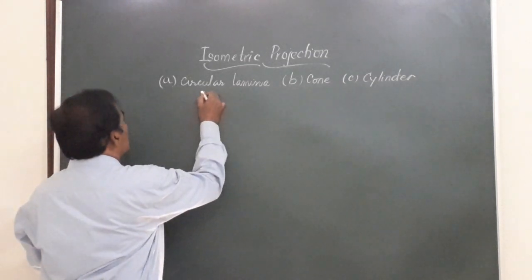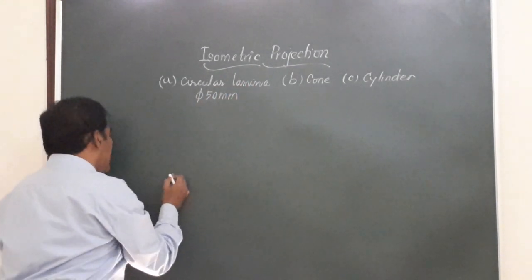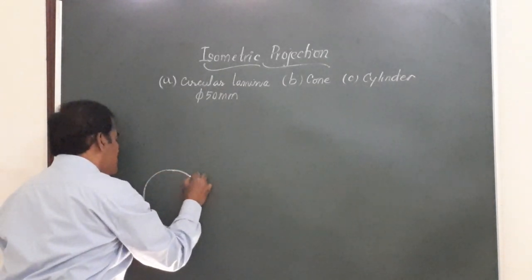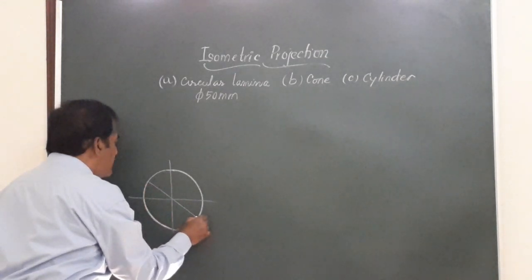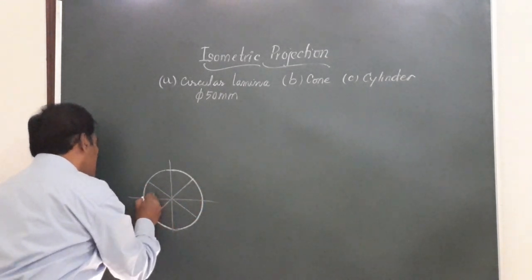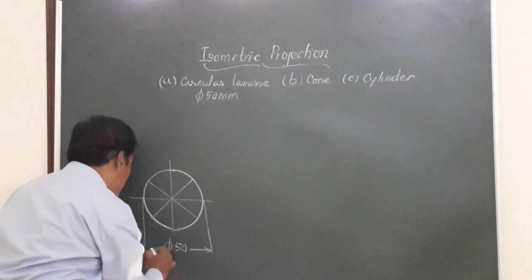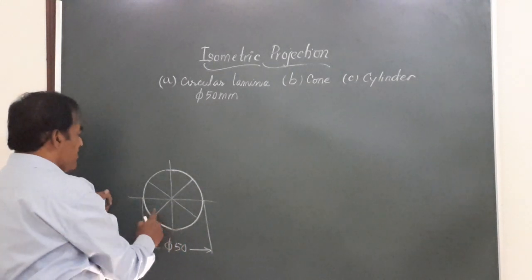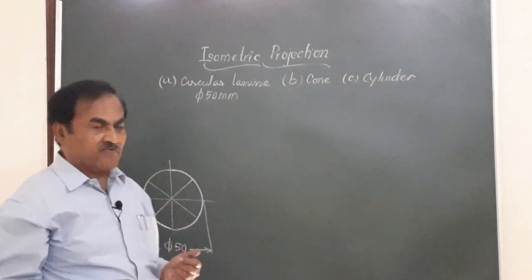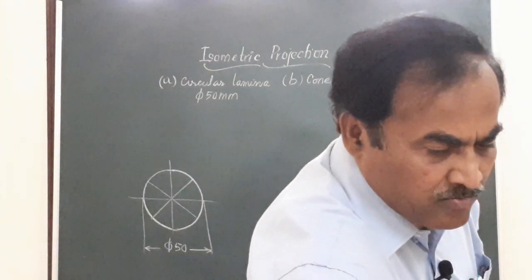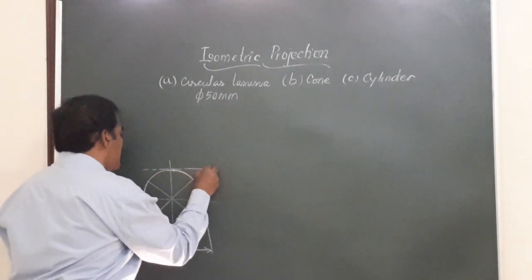Now I have the circular lamina of diameter 50 mm and I want to draw the isometric projection of this. So what we do - we draw the top view of that. There is a circle of the given diameter, and I am going to divide this equally into eight equal parts. This has a diameter of 50 mm. Now, since it has a curved periphery, I am going to enclose this figure in a box. Since it is a circle, if you enclose it in a box, that box is going to be a perfect square.